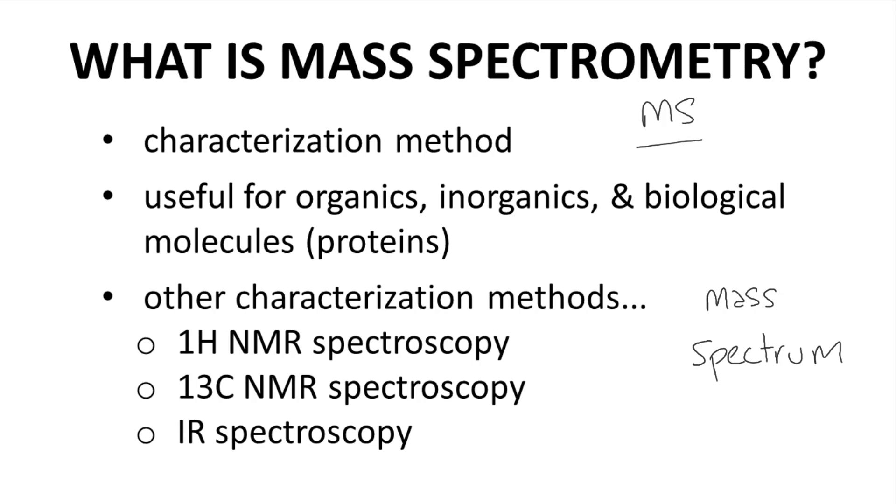MS is just one of many characterization methods. Other common organic characterization methods include proton and C13 NMR spectroscopy and infrared spectroscopy. Of course, organic molecules can also be analyzed and characterized through their physicochemical properties – properties like melting point, physical appearance, boiling point, density, etc.